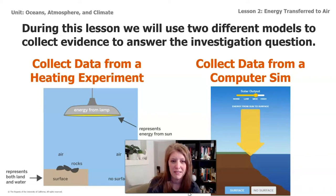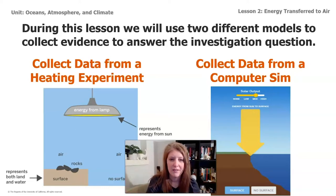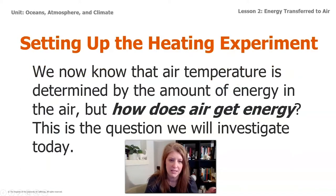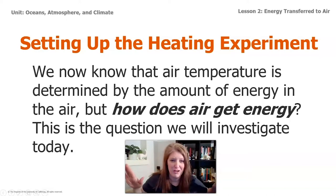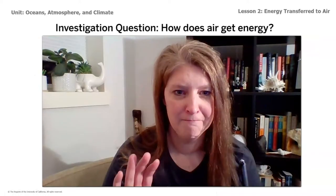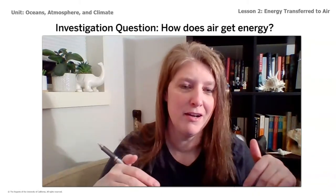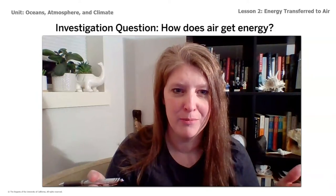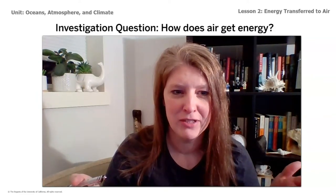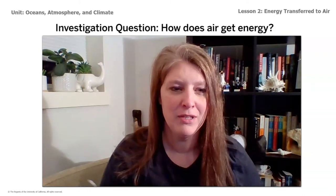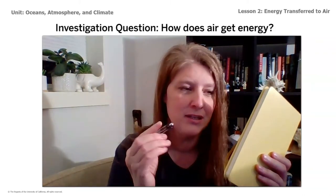But before we get to those two models, let's talk a little bit about claims. We know that the energy that comes to the air has to come from the sun, which is the source of all energy on Earth. We understand that the sun is what heats our planet and the atmosphere. So how does it happen? Before we continue on, I want you to take a moment to jot down some ideas in your notebook, your packet, a Schoology discussion, or something like that — just record what do you think is happening. How does the Earth's atmosphere get heated?